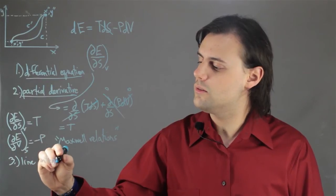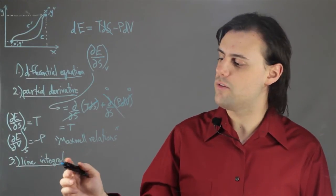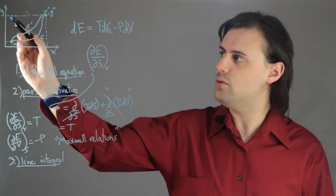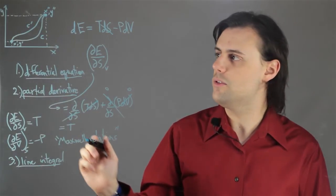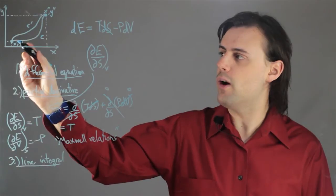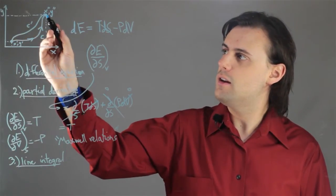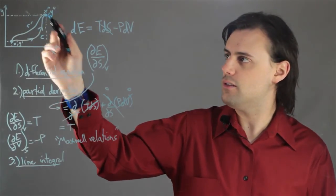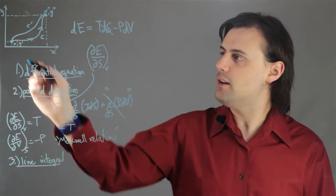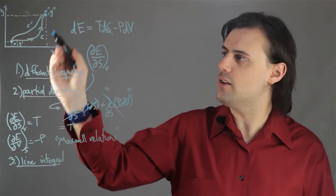And a line integral is used to calculate a particular type of physical quantity involving these types of graphs, where I have two independent thermodynamic variables, and I have a state of the system at some coordinate x prime, y prime, and I flow along a particular trajectory to another coordinate in this phase space, x double prime, y double prime. And if I want to calculate, for example, the change in heat or the amount of work going from this point to this point,